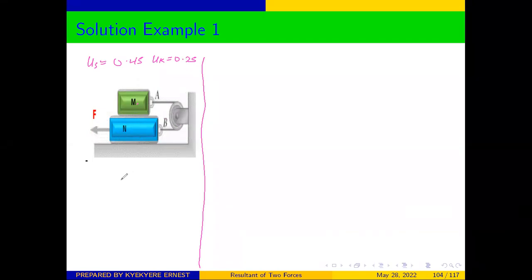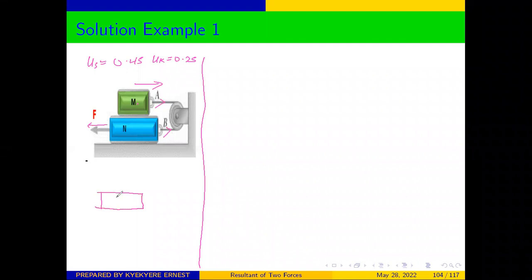Looking at the first block M: if a force is applied in that direction, block M is going to move to the right. To draw the free body diagram, we need to detach block M from all other surfaces. For cables, forces always point away from the point of interest, so the cable tension points away from the block.